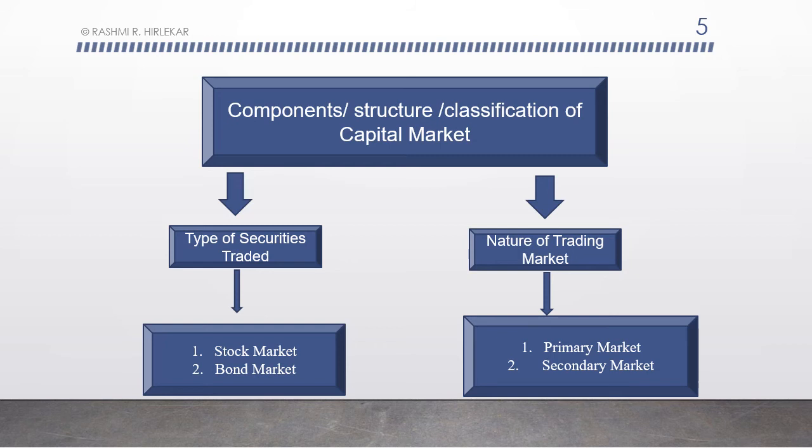The capital market can be classified on the basis of types of securities traded — such as stock market and bond market — or on the basis of the nature of the trading market, such as primary market, also called the new issue market, and secondary market.